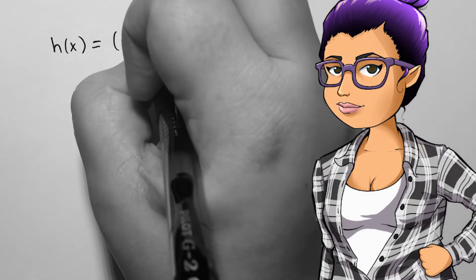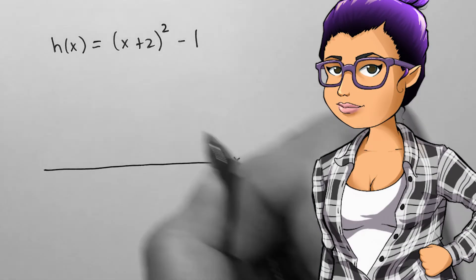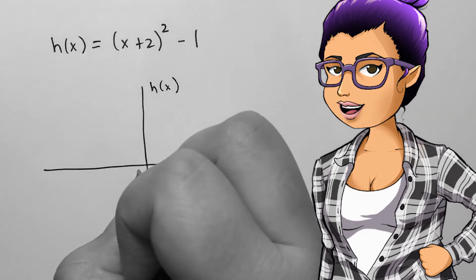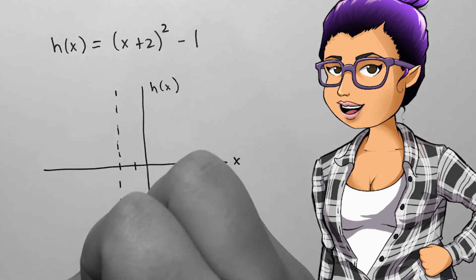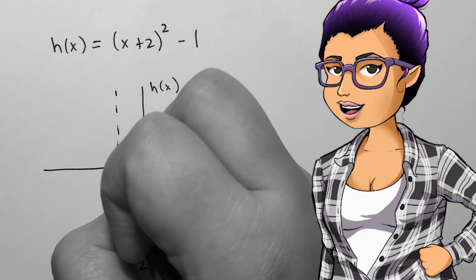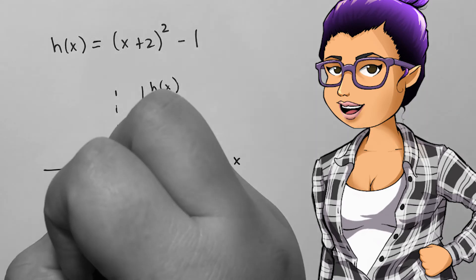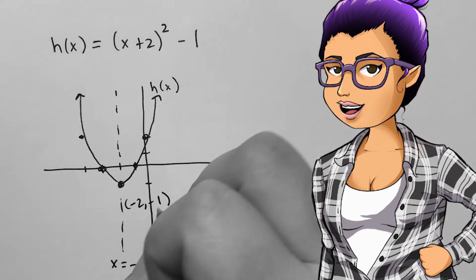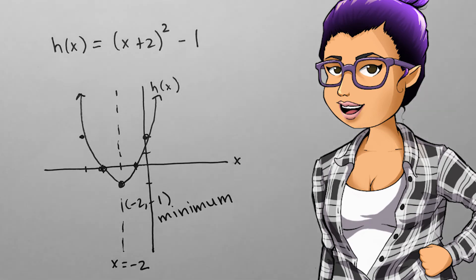Given the vertex form h(x) = (x + 2)² - 1, we can graph the quadratic function along with labeling the axis of symmetry at x = -2, the vertex at (-2, -1), and identifying the vertex as a minimum since it's the smallest point on the graph.